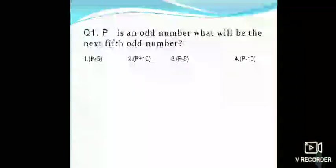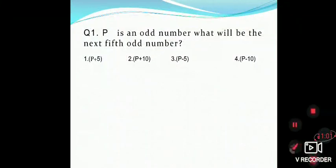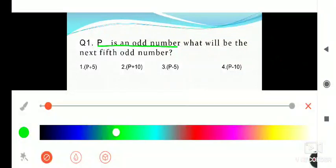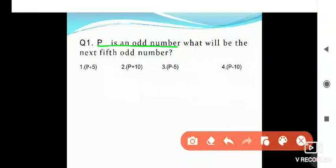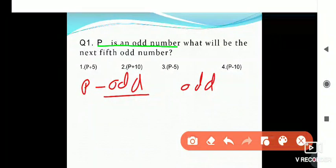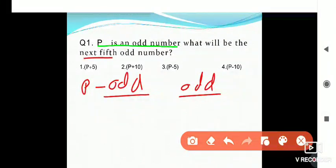Now some questions based on these numbers. Question: P is an odd number — what will be the next 5th odd number? P is odd and we have to find the next odd number. As we know, odd and even alternate: 1 odd, 1 even, 1 odd, 1 even. So finding the next 5th odd number from P.